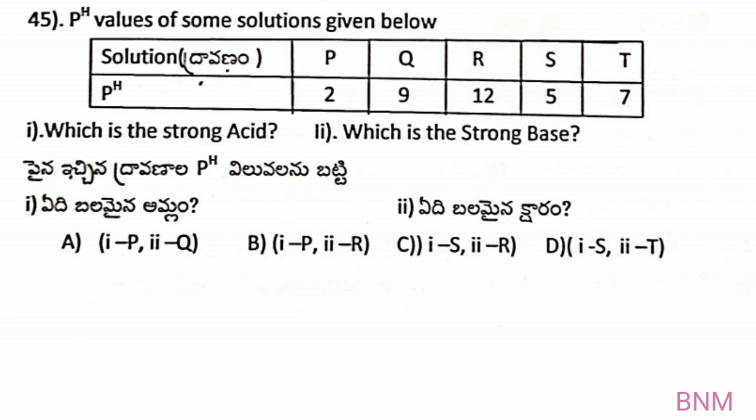pH values of some solutions: P=2, Q=9, R=12, S=5, T=7. Which is the strong acid? P with pH 2 is the strong acid. Which is the strong base? R with pH 12 is the strong base. So 1 to P, 2 to R — option B is the right answer.